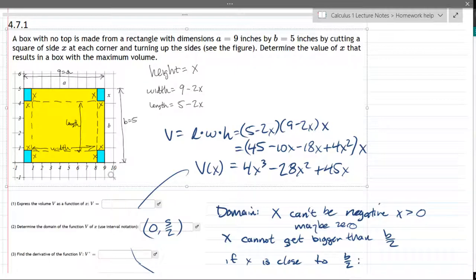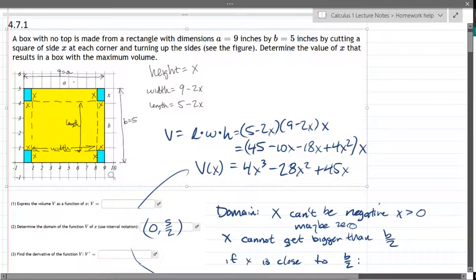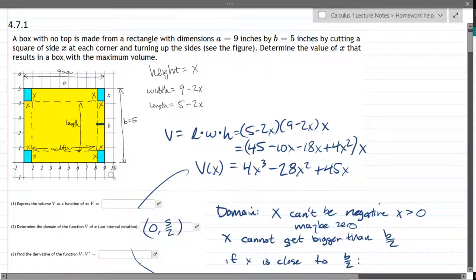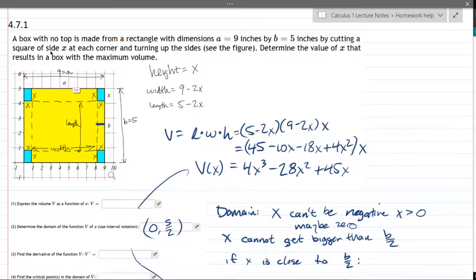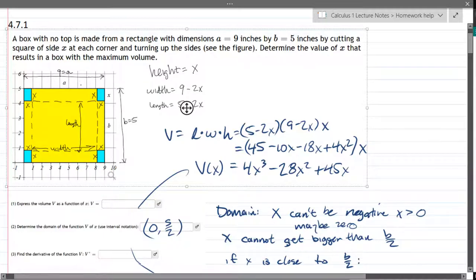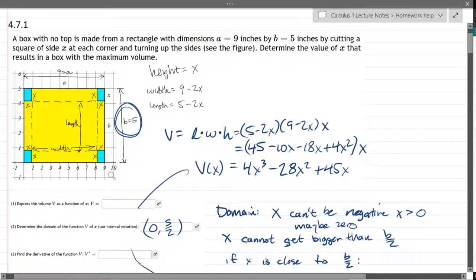It's going to be a positive small number. So it can't exceed, it can't go bigger than half of b, because then you'd be cutting out a piece that basically eliminated the height. So it can't go past half of b, or half of a, but half of b is 5 over 2. Half of a is 9 over 2, so the limiting number would be half of b, or 5 over 2.